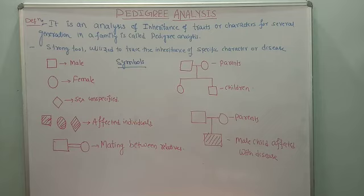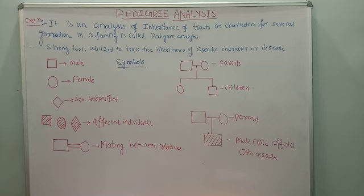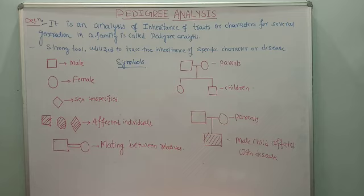So if you understand these symbols and their meanings, we can understand the pedigree analysis. In the examination, you should be able to identify the symbols - square means male, circle means female, shaded means affected, empty means normal. If you understand the meaning of all these symbols, it is very easy to work out the problems or to identify the pedigree analysis.